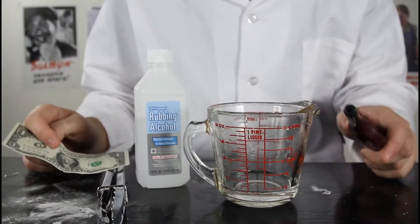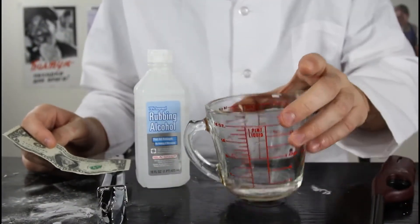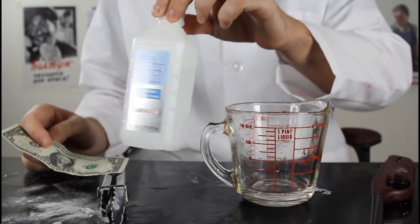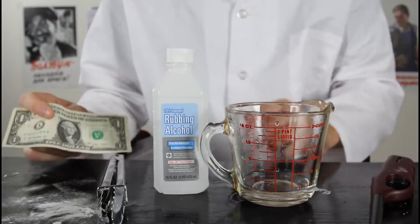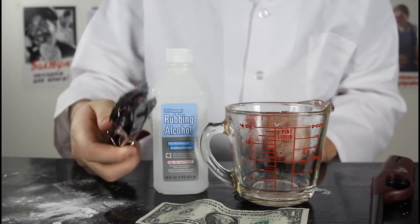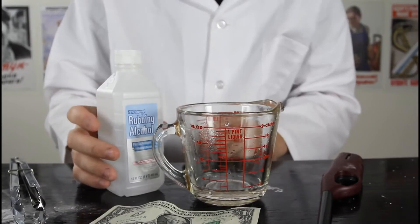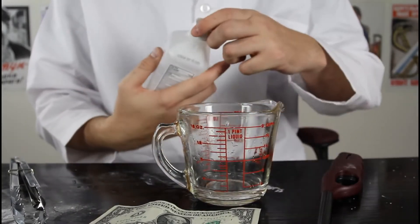For this experiment, you're gonna need a lighter, a glass, 70% alcohol or 90, whatever, rubbing alcohol, and a dollar and the thorns. Kids, do not try this at home, adults provision.